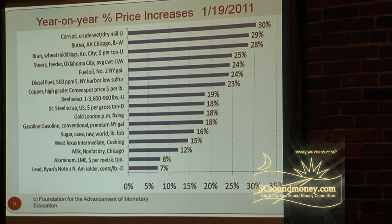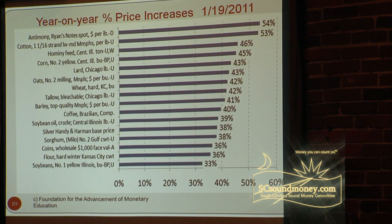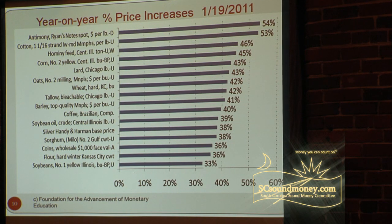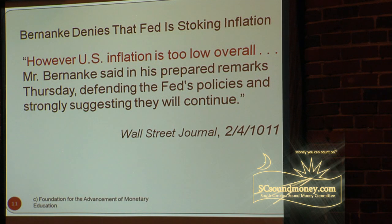Cotton up 53 percent, ground beef up 46 percent. We're not talking about no inflation — we're talking about double-digit inflation on almost everything you can buy.